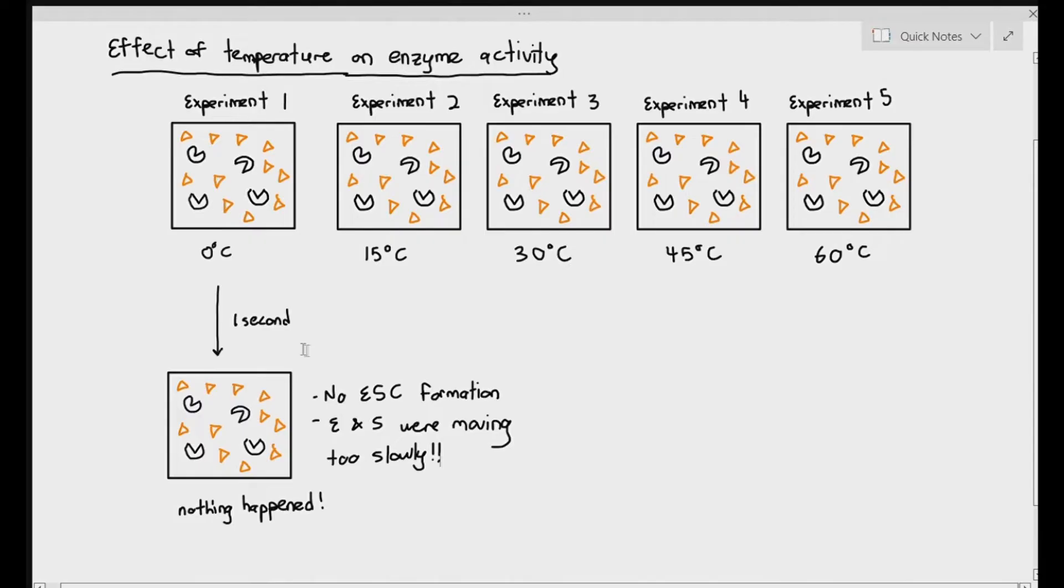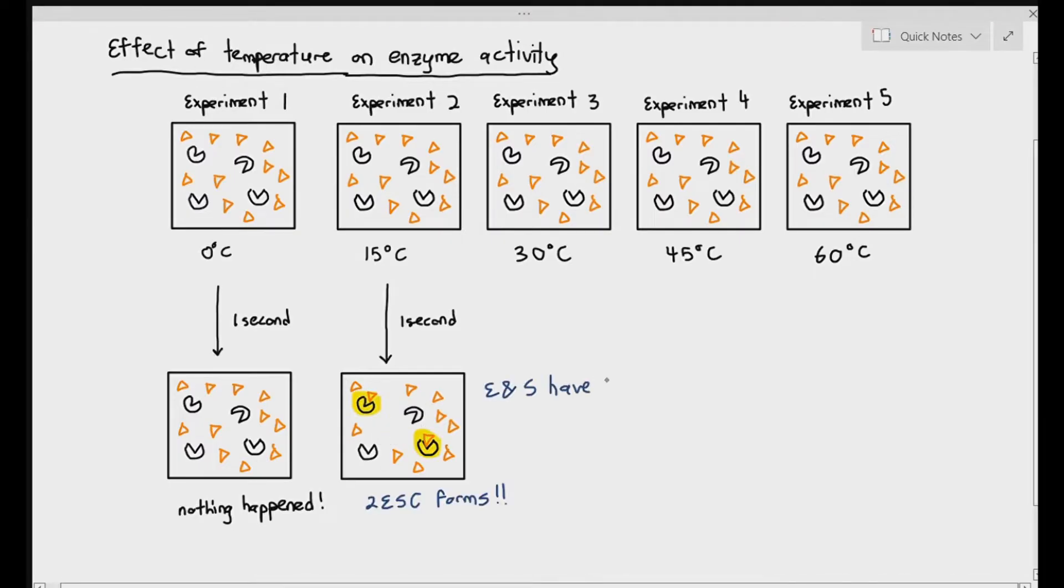At 15 degrees Celsius, after one second, perhaps theoretically two enzymes met with the substrate because the enzyme and substrate have a higher kinetic energy, so they have a higher chance of forming ES complexes. So the initial rate of reaction probably will be two products per second.